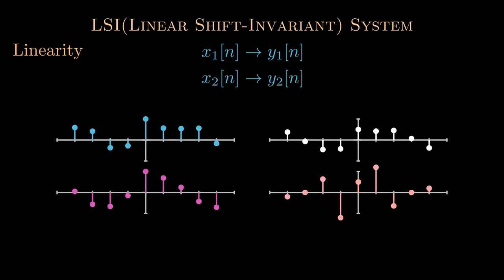Similarly, y2[n] is the system response of x2[n]. Then this property says that a linear combination of these two inputs produces the same linear combination of their individual output signals.